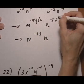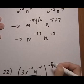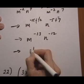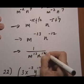Both of those have negative exponents, which we don't want, so we're going to shift them both to the denominator. We get one over m to the thirteen, n to the twelve.